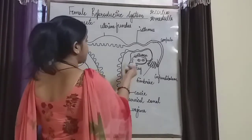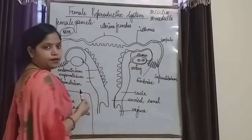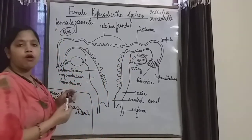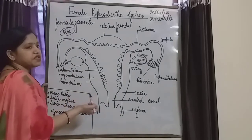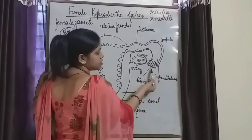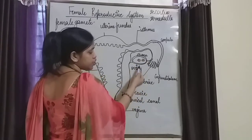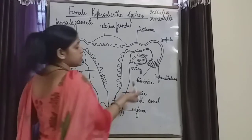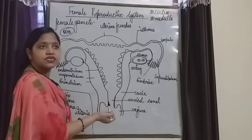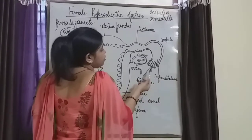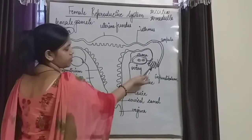The female reproductive system also consists of paired fallopian tubes. Ovaries are also paired in number; they are almond-shaped, and fallopian tubes or oviducts are also two in number. The fallopian tube is further divided into parts. These finger-like projections are said to be fimbriae. The function of fimbriae is to capture the ova during the time of ovulation.